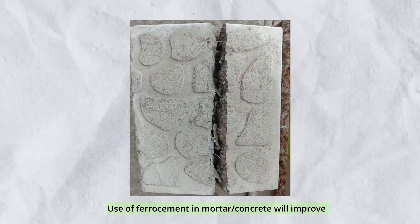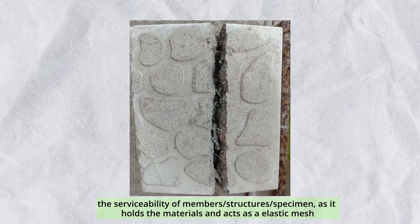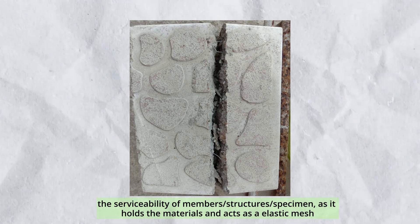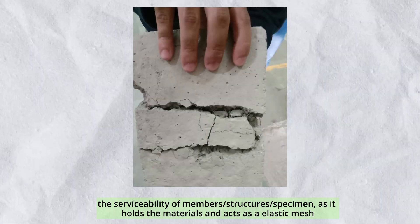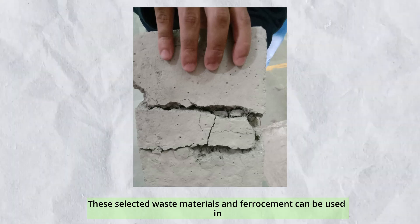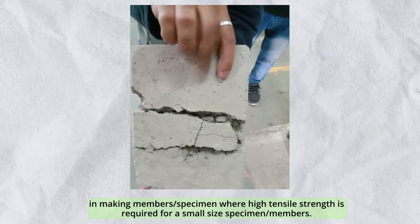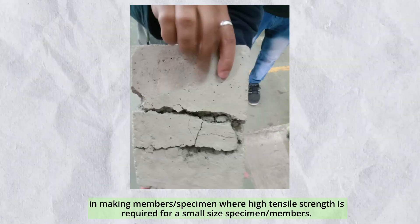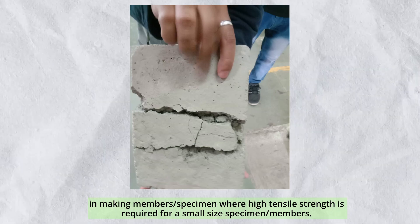Use of ferro-cement in mortar concrete will improve the serviceability of members or structures, as it holds the materials and acts as an elastic mesh. These selected waste materials and ferro-cement can be used in making specimen members where high tensile strength is required for small size members.